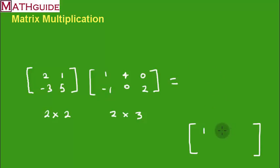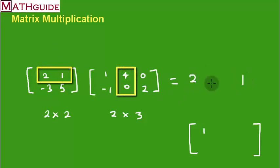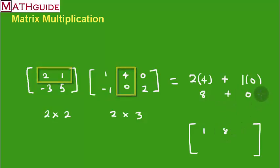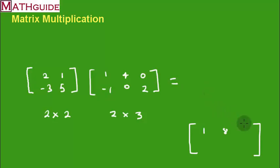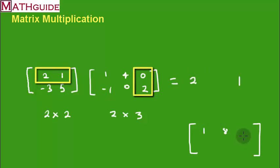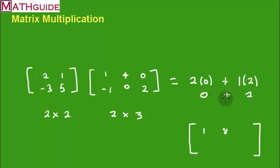For the first row, second column entry: take row one (2 and 1) and multiply by column two (4 and 0). Multiply, then add: 2×4 + 1×0 = 8. So 8 goes in position row one, column two. For the first row, third column entry: take row one (2 and 1) and multiply by column three (0 and 2). Multiply then add: 2×0 + 1×2 = 2. So 2 goes in position row one, column three.